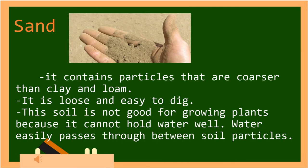The first type of soil is sand. Sand contains particles that are coarser than clay and loam. It is loose and easy to dig. This soil is not good for growing plants because it cannot hold water well. Water easily passes through between soil particles.